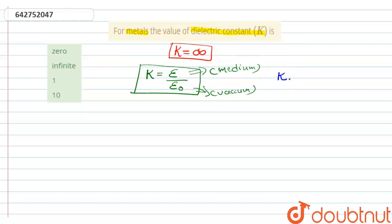That is, dielectric constant for vacuum is one. Now we know metal is most polarized.